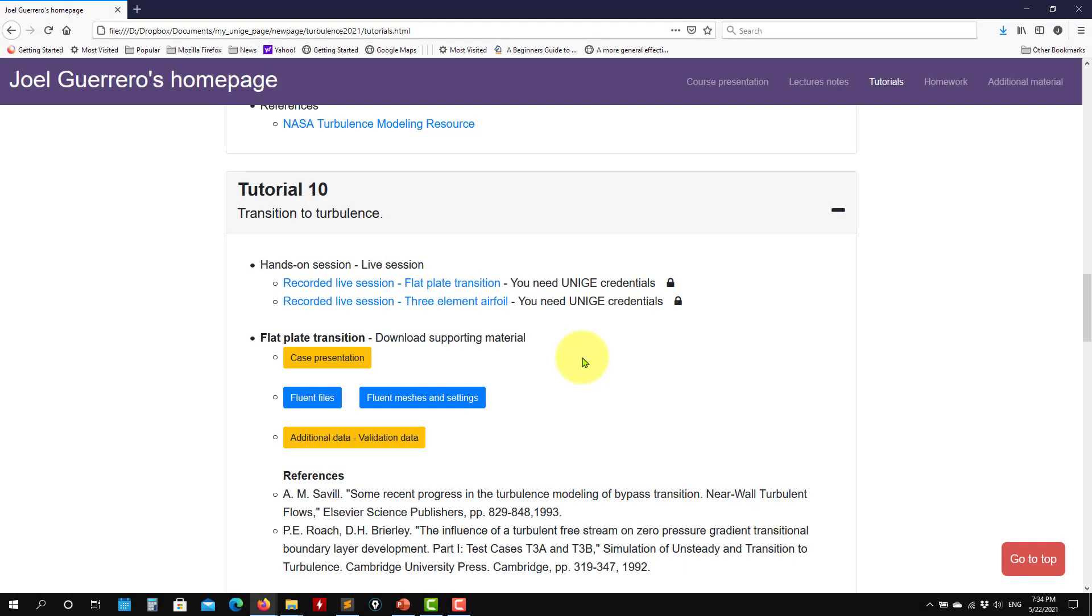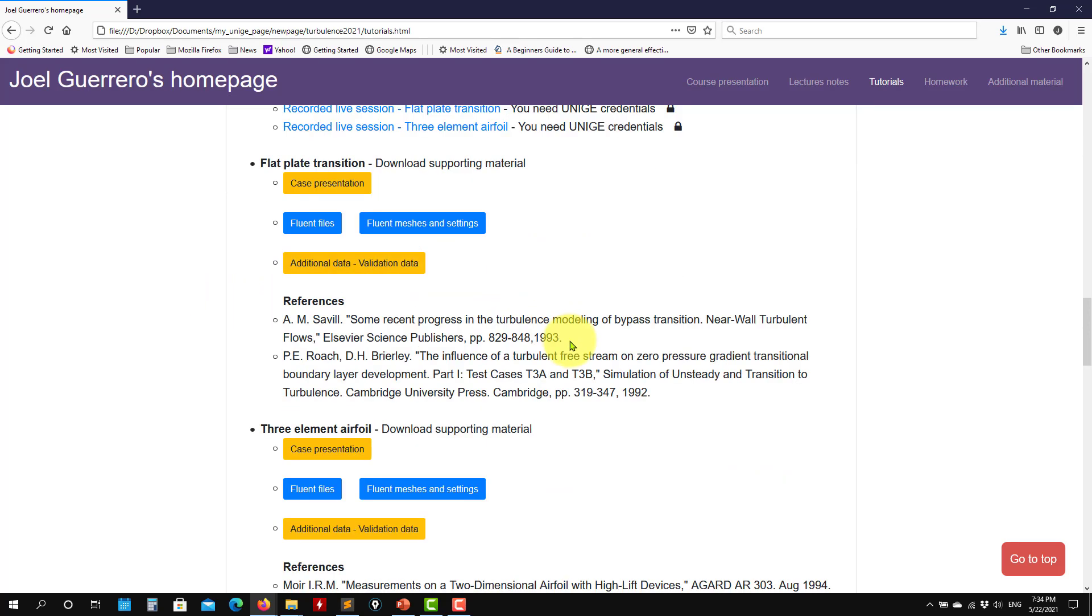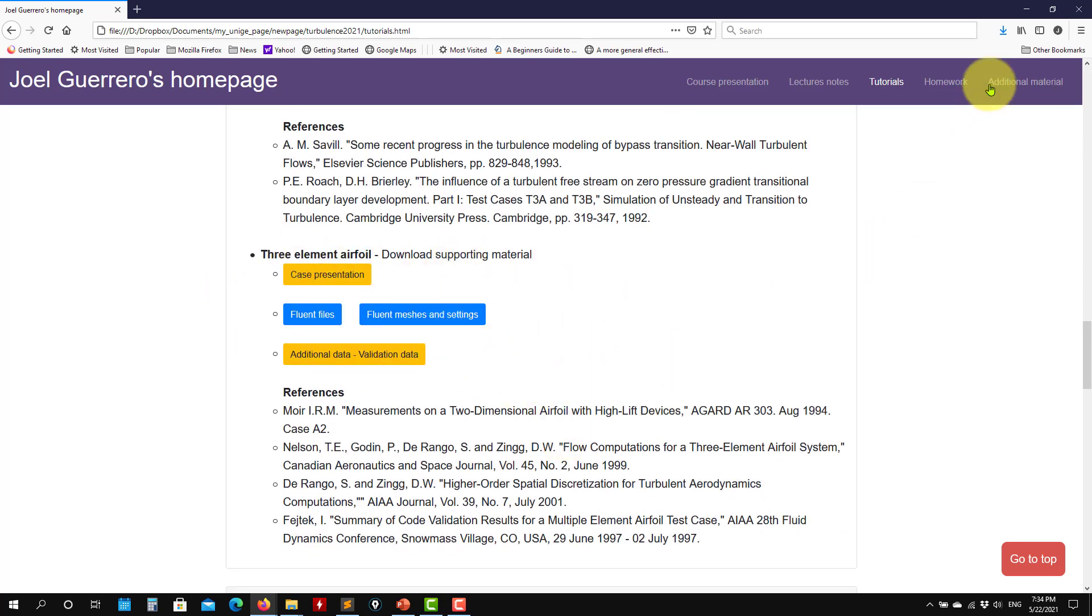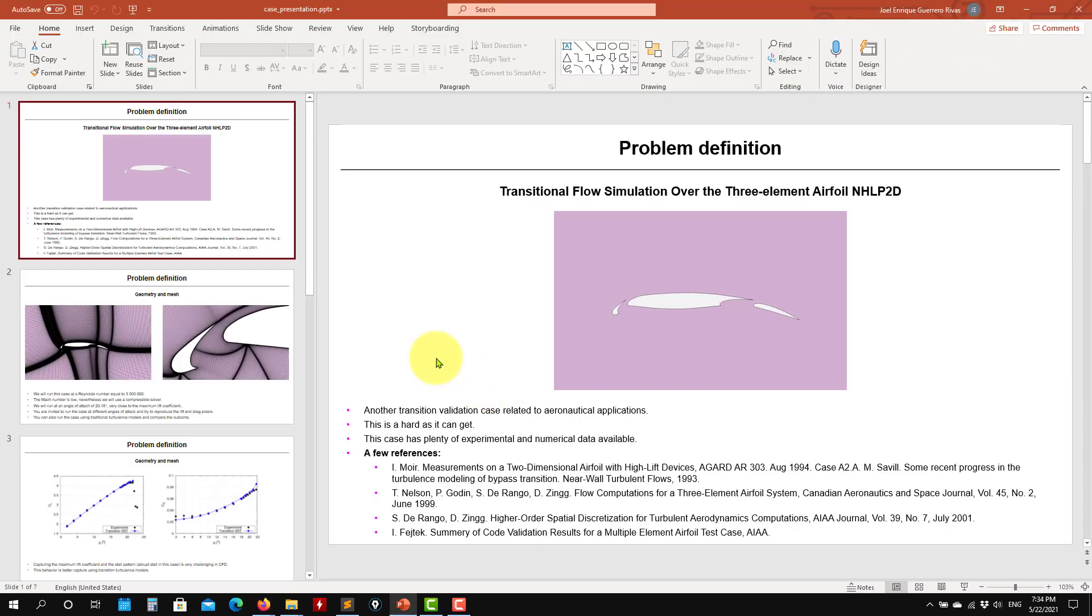Hello, welcome back to the second tutorial of Transition to Turbulence. In this case we are going to work now on the three-element airfoil. You have here all the files and some references, so let's see what we're going to do.